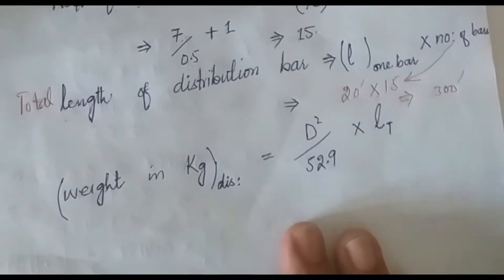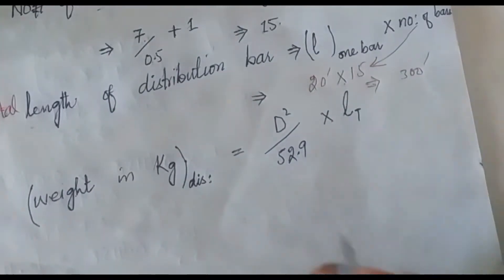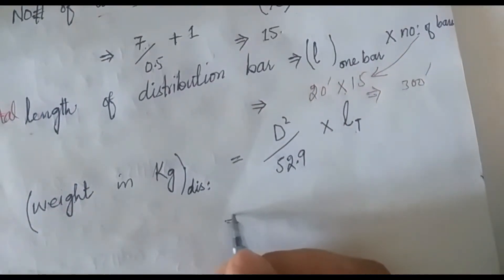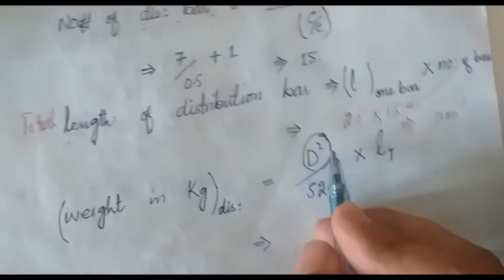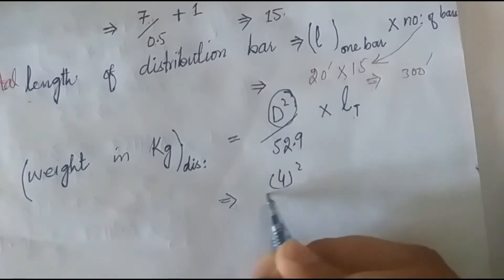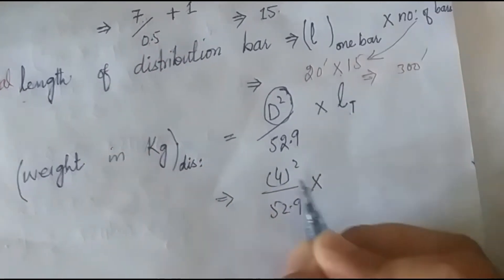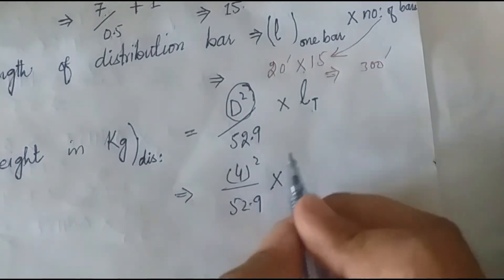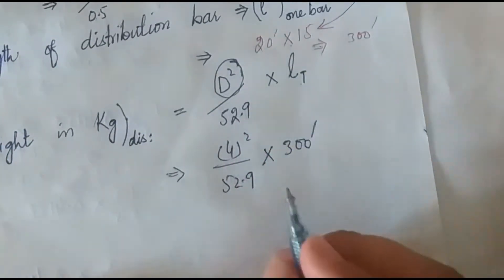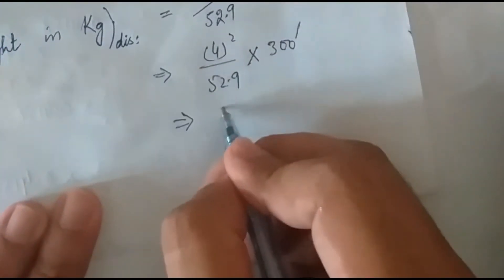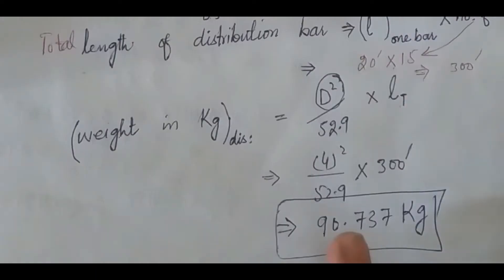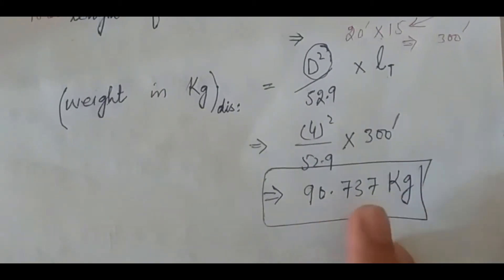For the weight in kilograms of the distribution bar, the formula is: d squared divided by 52.9, multiplied by total length. The bar number is 4, so we calculate: 4 squared divided by 52.9, multiplied by 300 feet. This gives a value of 90.737 kilograms. So the weight of the distribution bar is 90.737 kg.